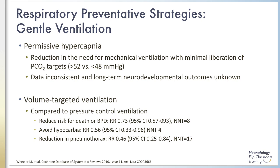Another gentle ventilation strategy is volume-targeted ventilation. This strategy is aimed to limit volume trauma and achieve automatic weaning of PIP, which can potentially limit ventilator-associated lung injury. A 2010 Cochrane review of 12 randomized controlled trials comparing pressure-limited ventilation with volume-targeted ventilation reported a reduction in the combined outcome of death or BPD with volume-targeted ventilation.